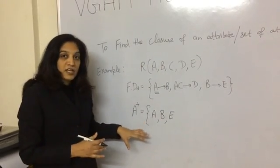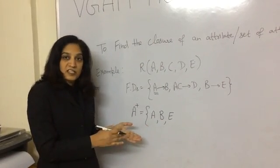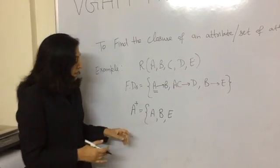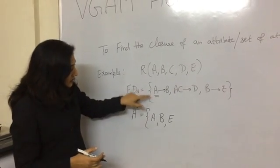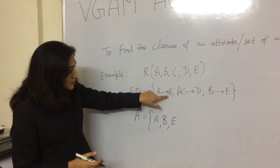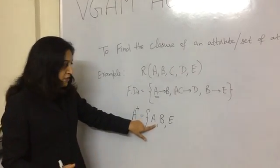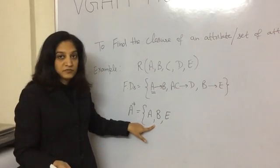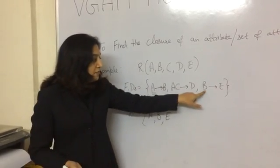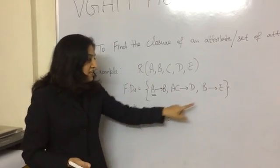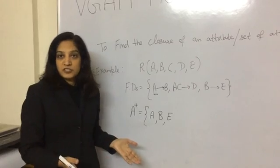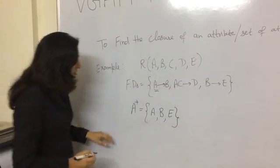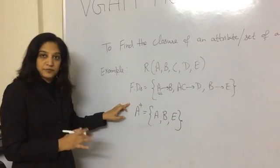We are not done yet. We will repeat this exercise until there is no change in the attributes. Again: A is there, so B should be there — it is already there. AC: C is not there, so we cannot put D. B is there, E is there. There is no change in the set of attributes, so we are all set. This is the closure of attribute A.